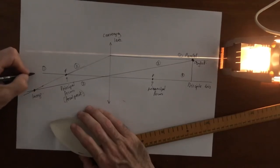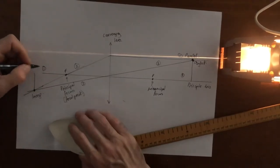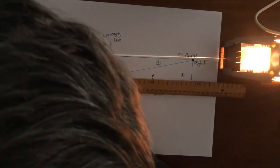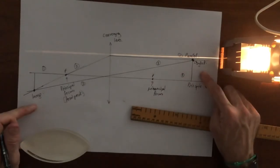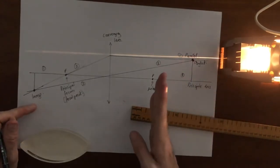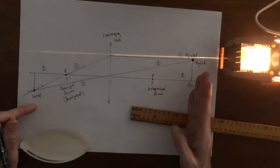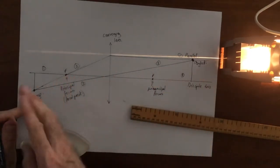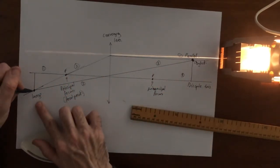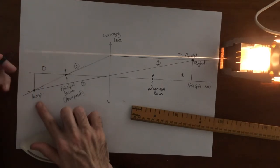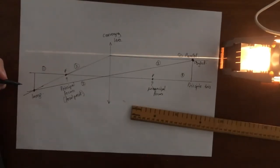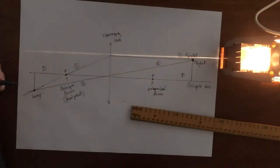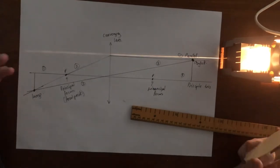Sometimes you'll see it drawn like this — it comes down from the principal axis, meaning that the image is inverted with respect to the object. So we've got an object which is outside the principal focus, and that gives us an image which is also outside the principal focus, but it's also inverted. So if we were to look through this lens at an object outside the principal focus, we would be able to focus an image of that object and it would be upside down, which is how a lot of lenses work.